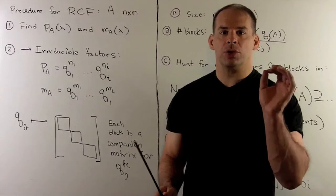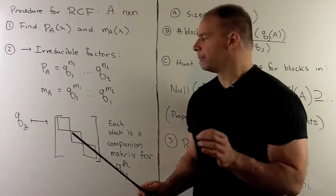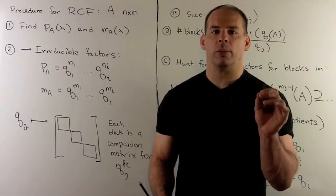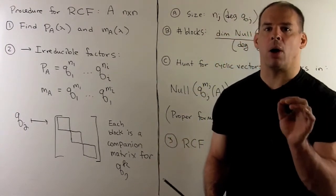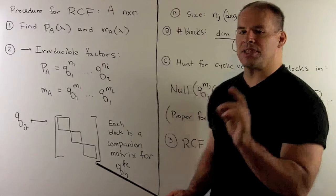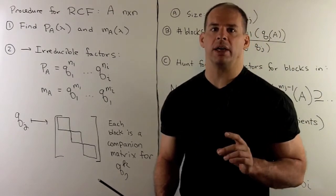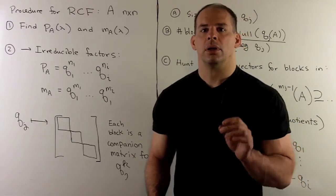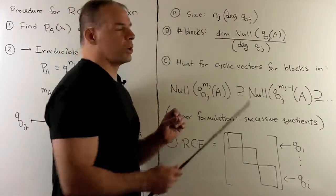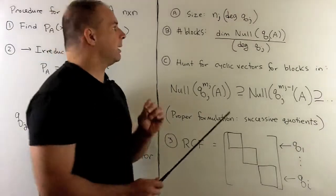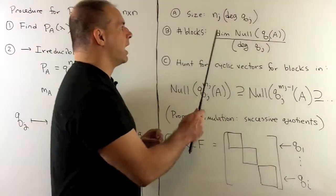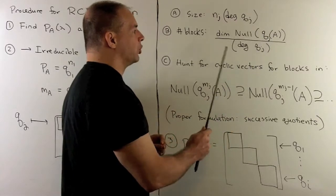Then to each irreducible factor, we assign a block diagonal matrix. For each diagonal block, we have a companion matrix corresponding to the polynomial Q_j raised to some power. At this stage, we're guaranteed a largest block of size m_j times the degree of q_j. The size of the block assigned to q_j is n_j times the degree of q_j. The number of blocks is given by the dimension of the null space of q_j of A, divided by the degree of q_j.